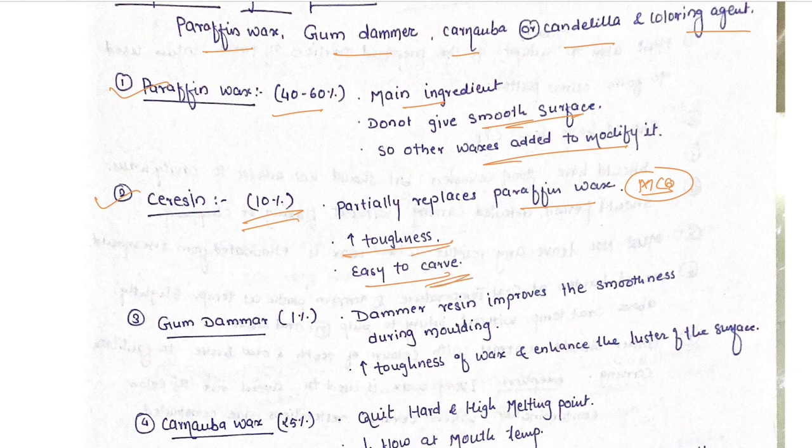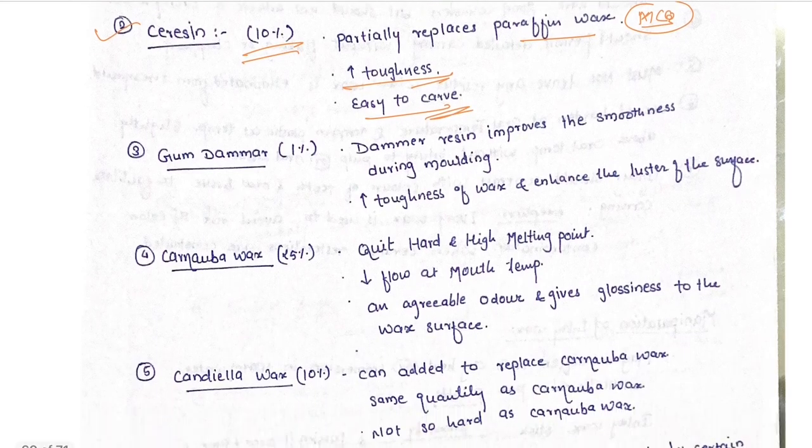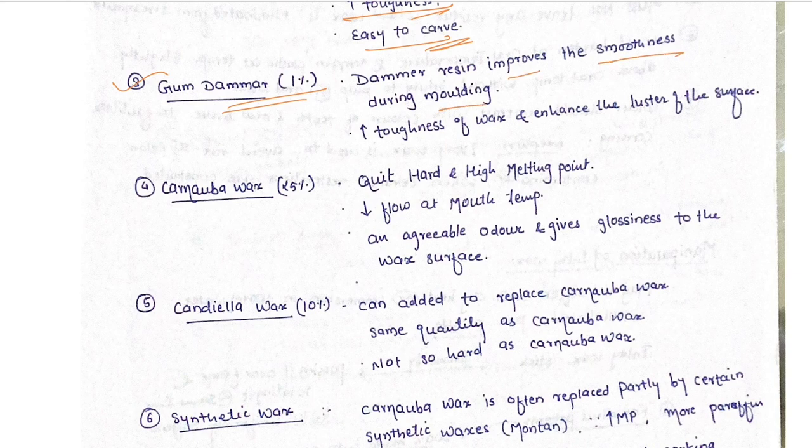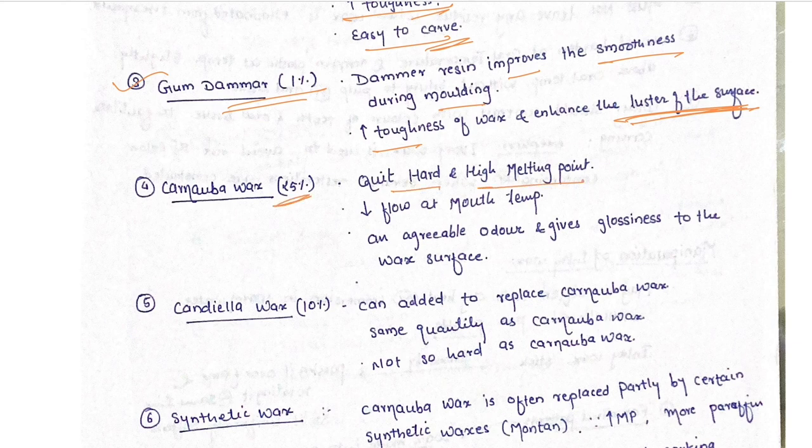It increases toughness and is easy to carve. Gum dammer is 1% composition. Dammer resin improves the smoothness during molding and increases toughness of the wax and enhances the luster of the surface. Carnauba wax is 25%, quite hard, high melting point, decreases flow at mouth temperature, and gives glossiness to the wax.